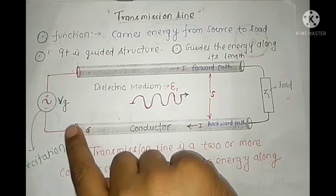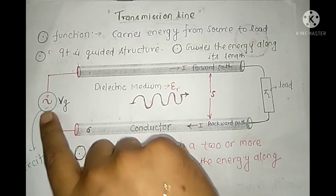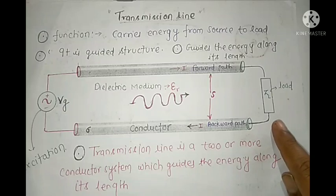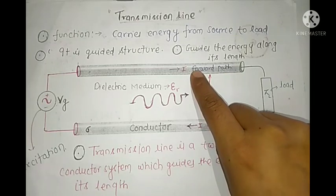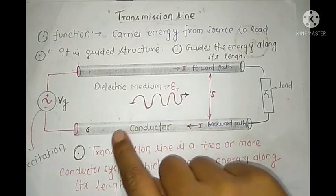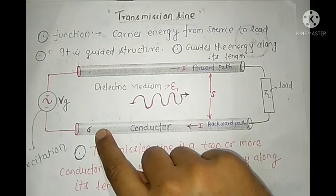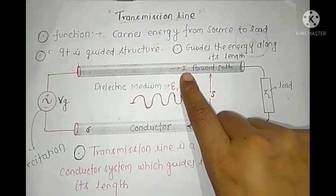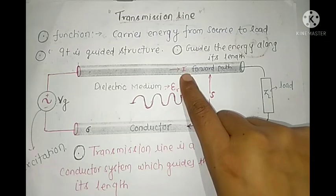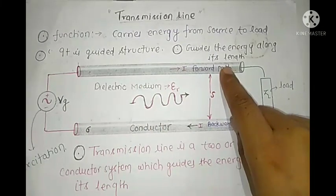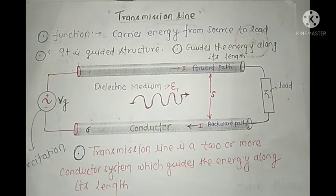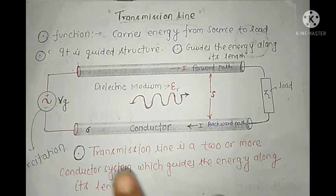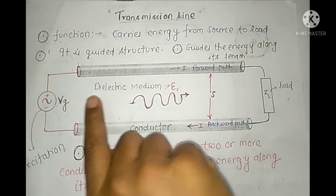One end of the transmission line is connected with excitation and another end is connected with load. This conductor contains an enormous amount of electrons and the property of the conductor is represented by sigma. Movement of electrons produces current. This first conductor is known as the forward path and the second conductor is known as the backward path.